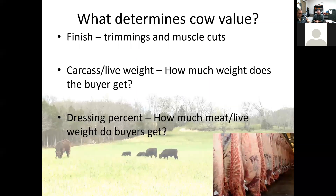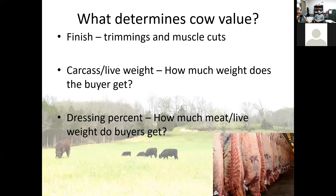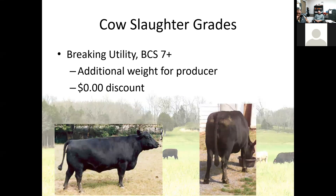What determines a cow's value really has to do with how much weight she has on her and how much meat there is to harvest. How much finished fat and trimmings versus muscle cuts? Is she a high-dressing or low-dressing cow? A low-dressing cow won't get as high a price; a higher-dressing cow — meaning you'll get more beef out of her — will bring a higher price. We're in the business of selling beef, and the more beef we get out of an animal, the higher price we'll see. That leads us to cow slaughter grades.